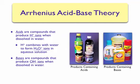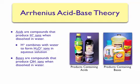Arrhenius then described bases as compounds that produce hydroxide ions when dissolved in water. On the right-hand side of the screen are pictures of common products that contain acids and bases. Lemon juice, vinegar, baking powder, and vitamin C or ascorbic acid are products that contain acids. Some common products that contain bases are oven cleaner, drain cleaner, any ammonia-based floor cleaner, and baking soda.